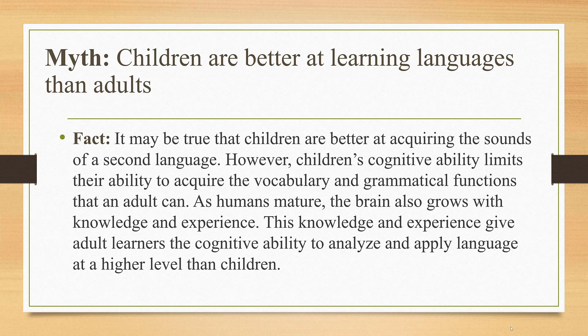This knowledge and experience give adult learners the cognitive ability to analyze and apply language at a higher level than children. In other words, referring to BICs and CALP, it may be easier for children to acquire the social aspect of language, but the academic aspect of language is more effectively acquired by adults.